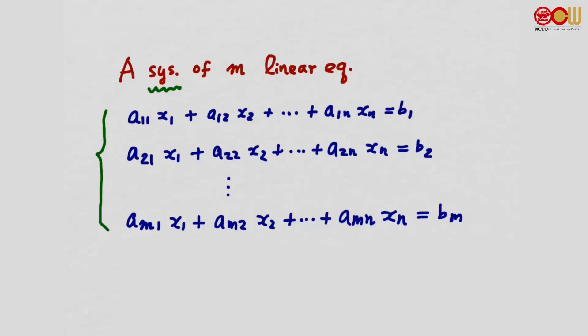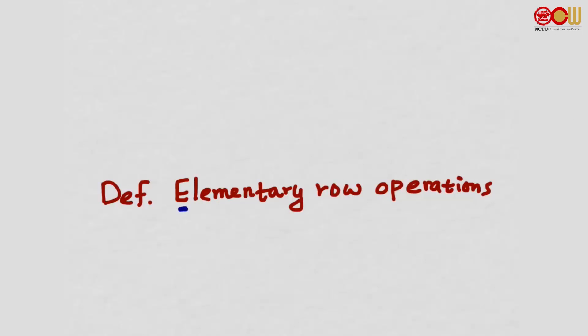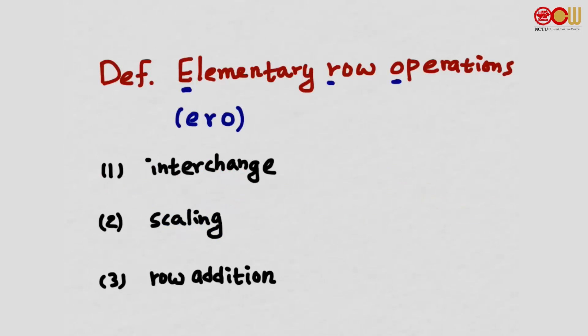The basic steps in Gaussian elimination are called elementary row operations. We will be talking about these operations a lot throughout the semester and will give them the abbreviation ERO. There are three types of ERO: the first one is interchange, the second one is scaling, and the third one is row addition.